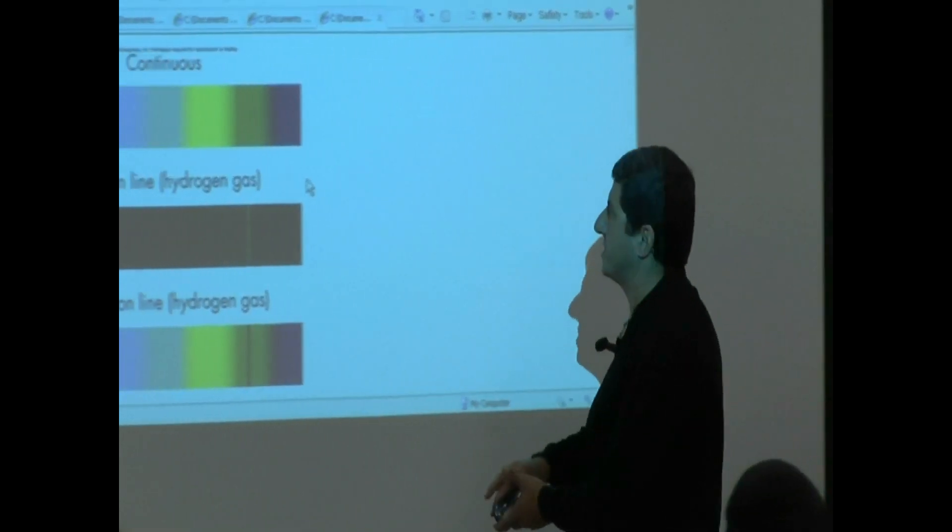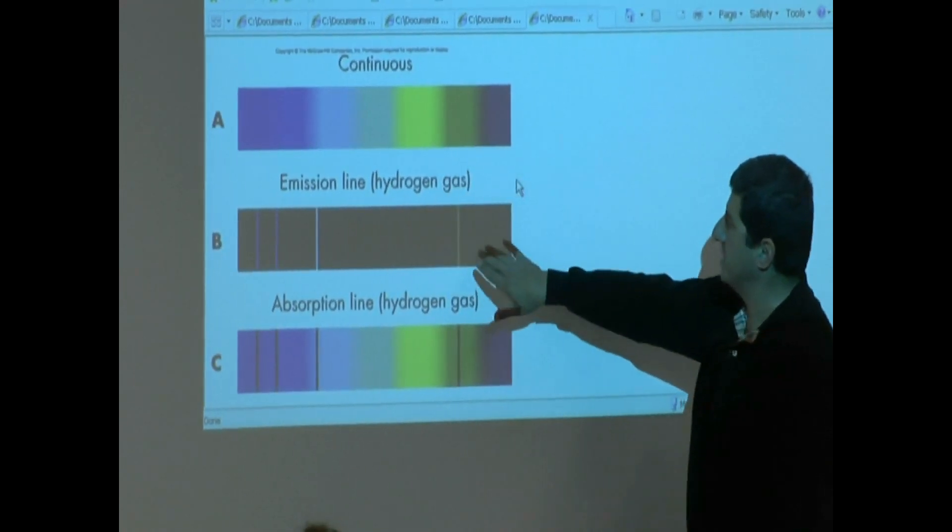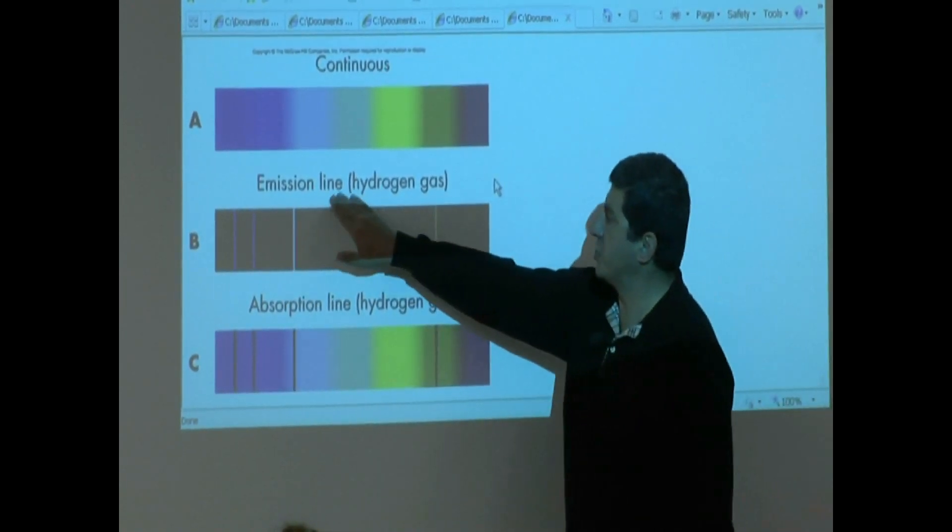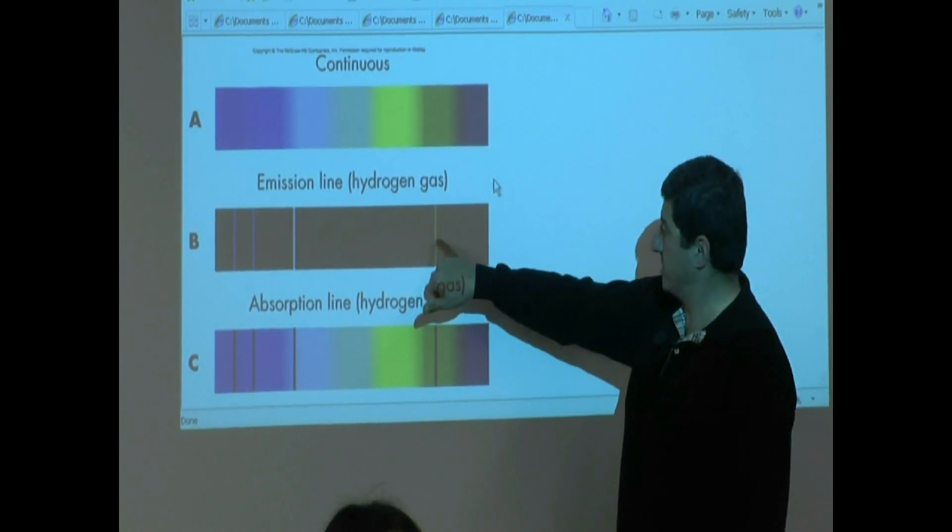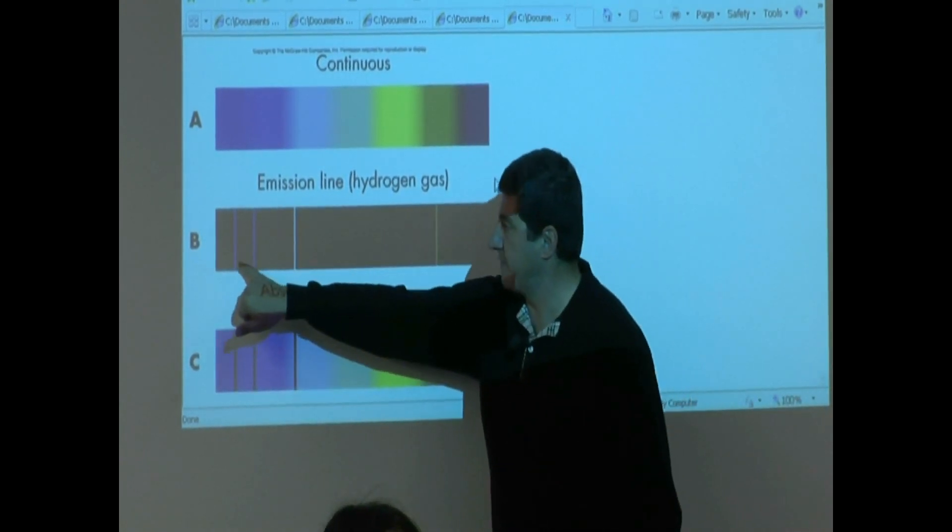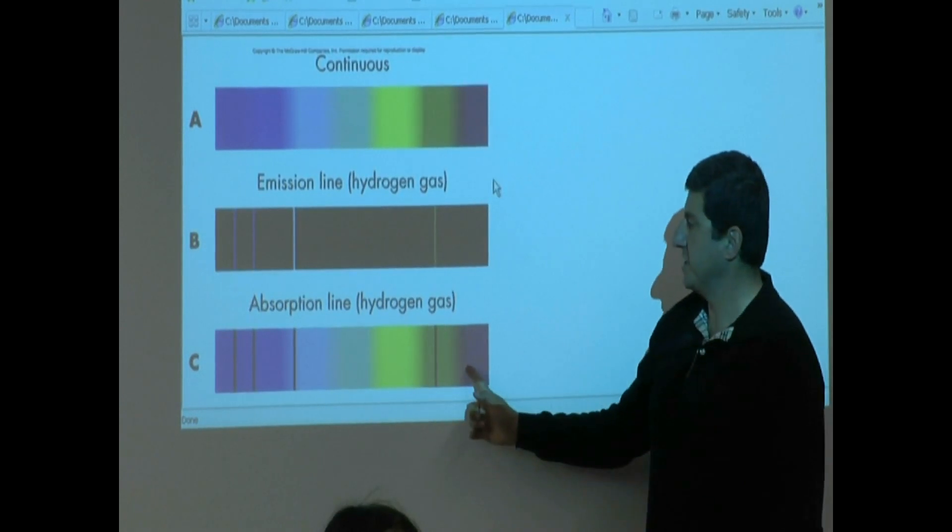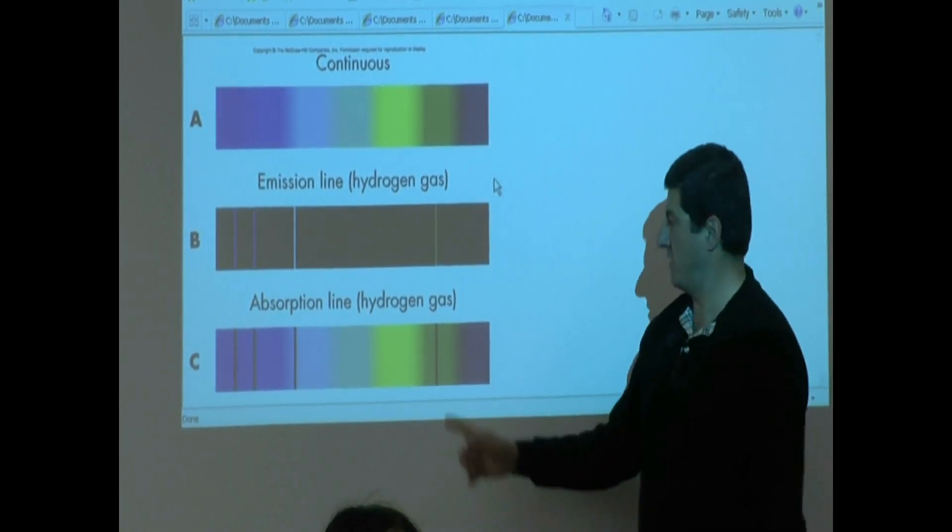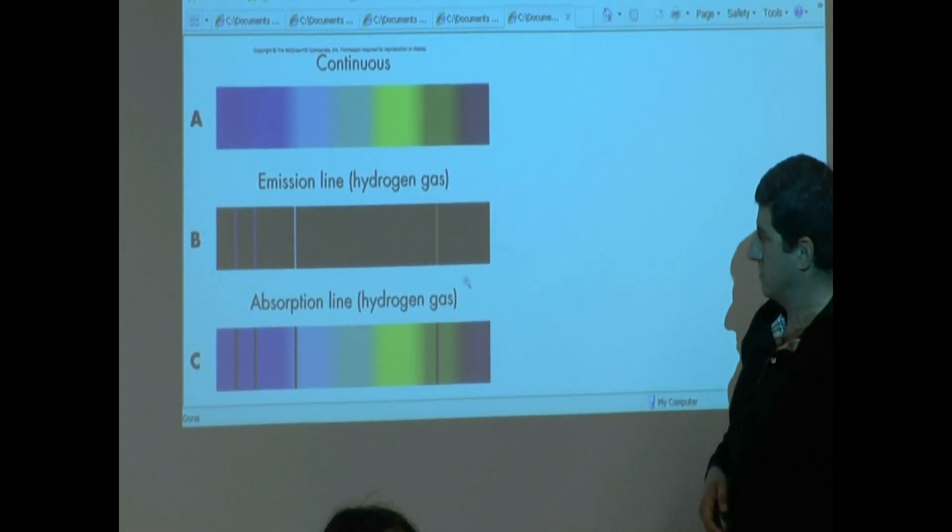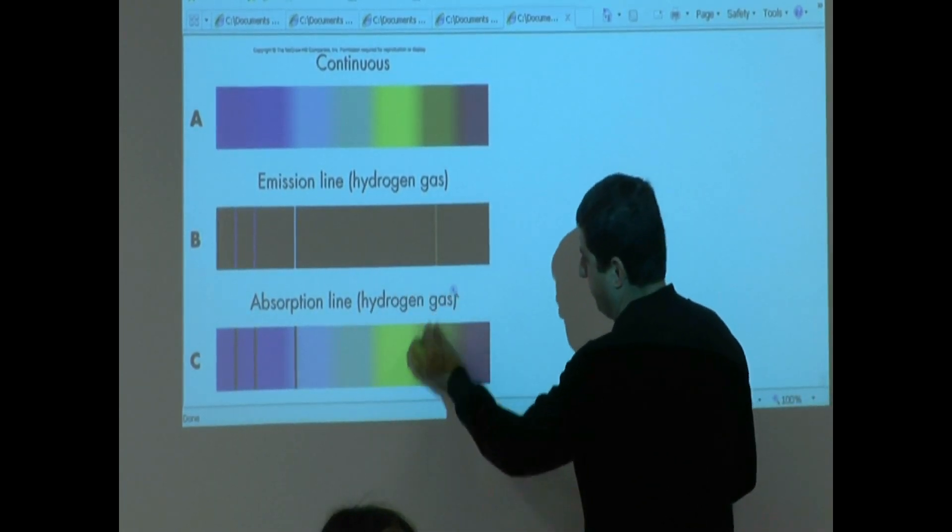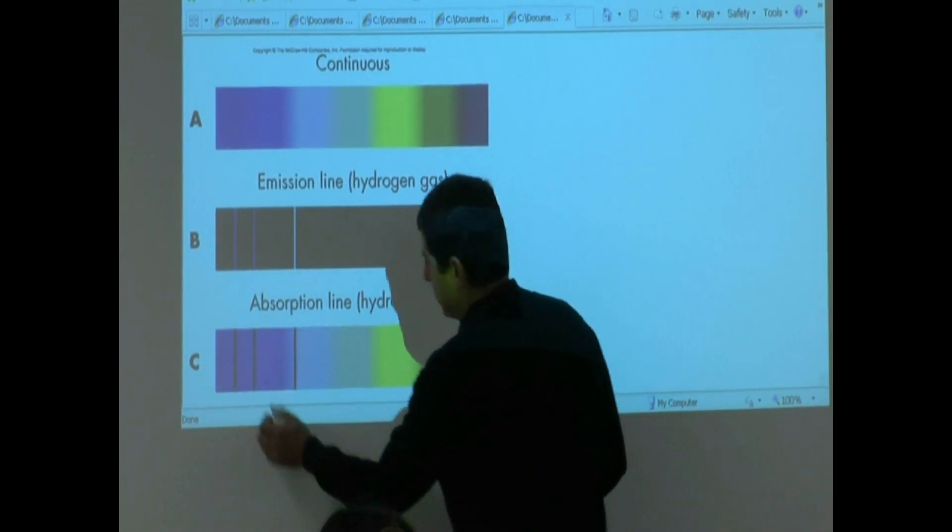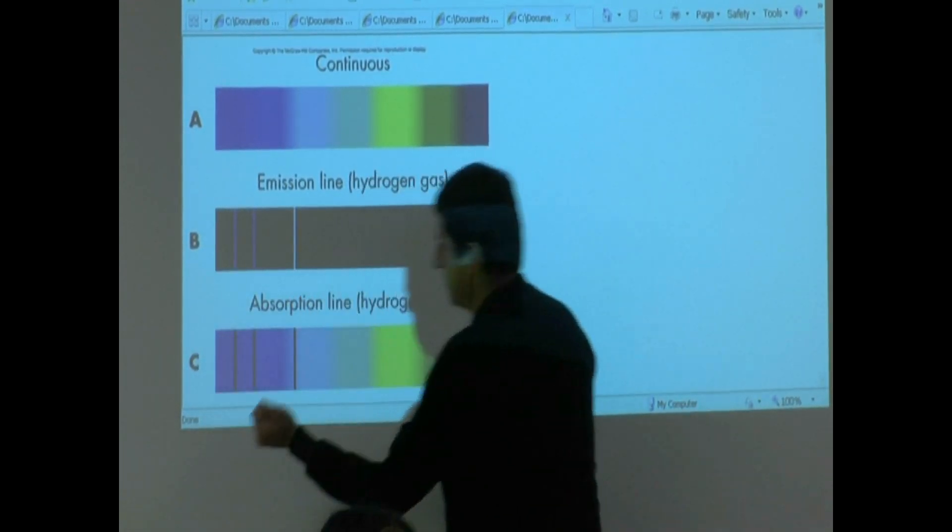Another way to see it again. Continuous emission. This is the emission spectra of hydrogen, the Balmer line - 656, 486, 434, 410. This is the absorption spectra of hydrogen. Background colored. The red line missing. Green line missing. The two violets missing. You see that?